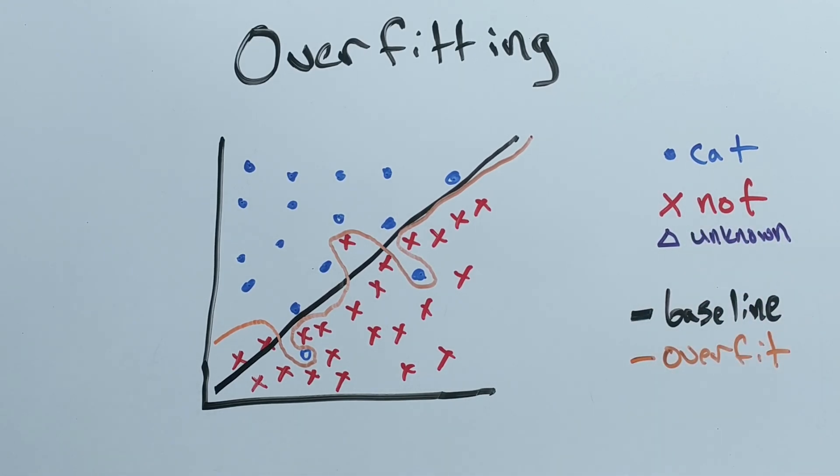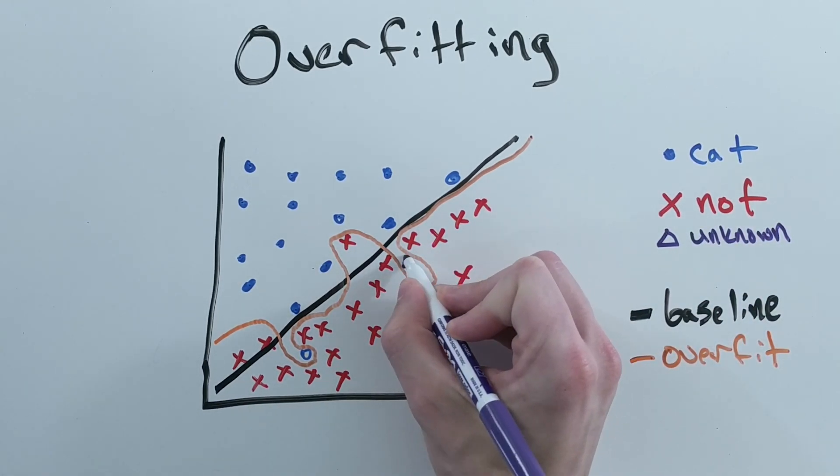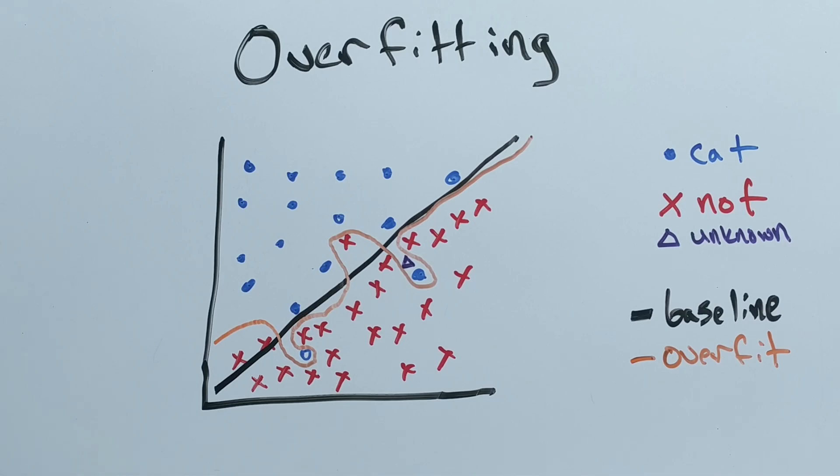This is bad because during inference if we see a new data point in this section, the overfitted model might say it's a cat, even though intuitively we'd think it's more likely to not be a cat since there are many more points around it that aren't cats than the one cat data point next to it.